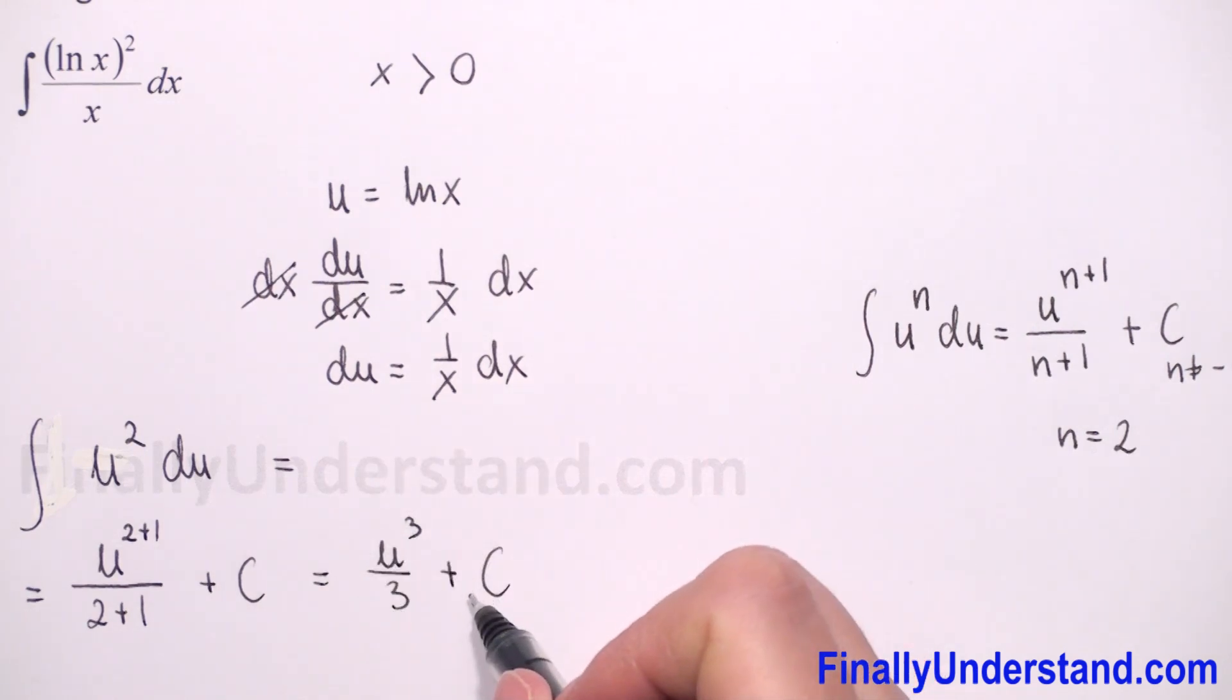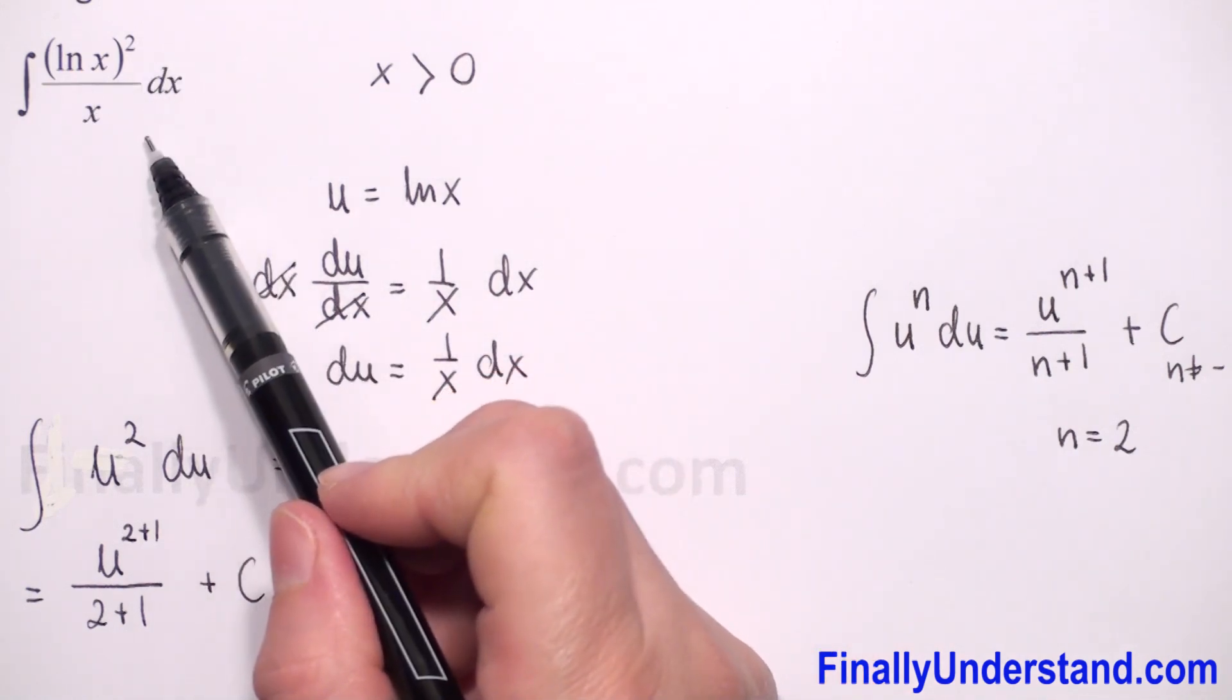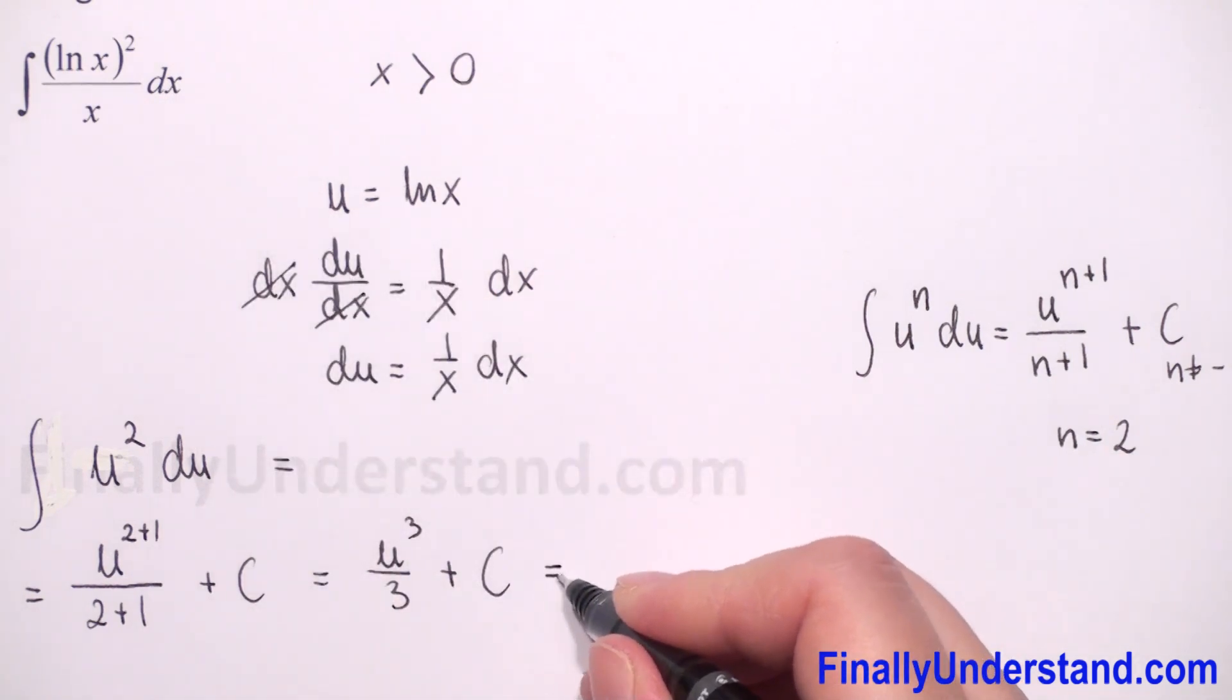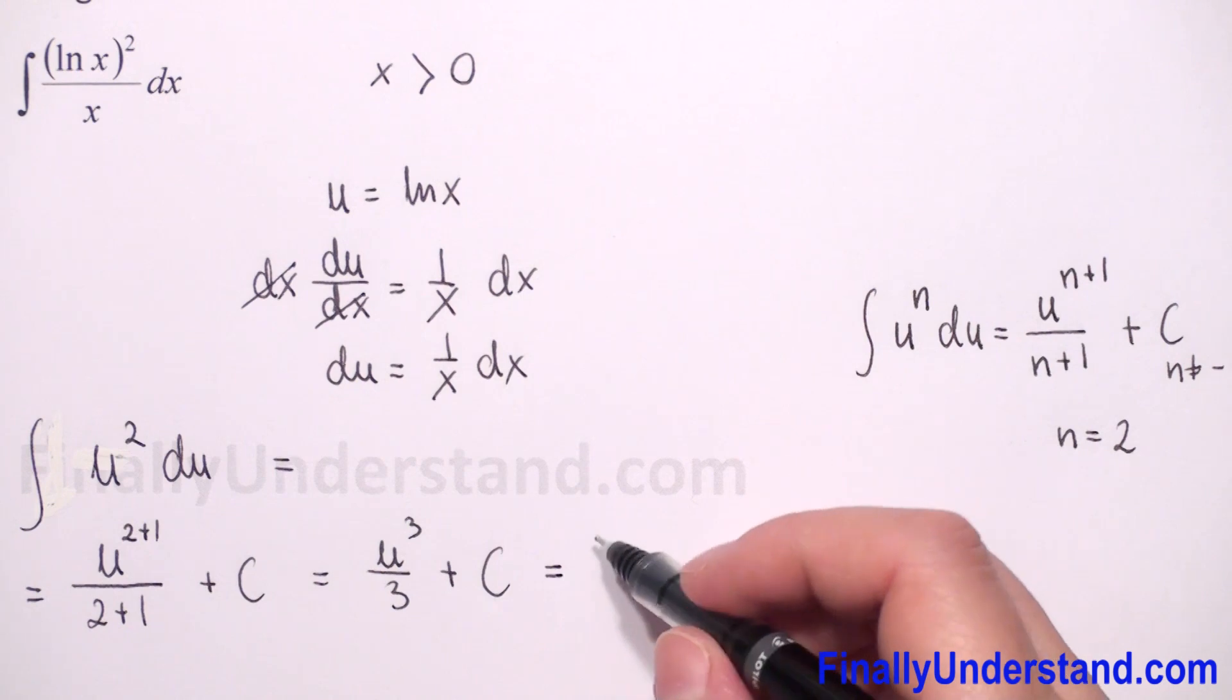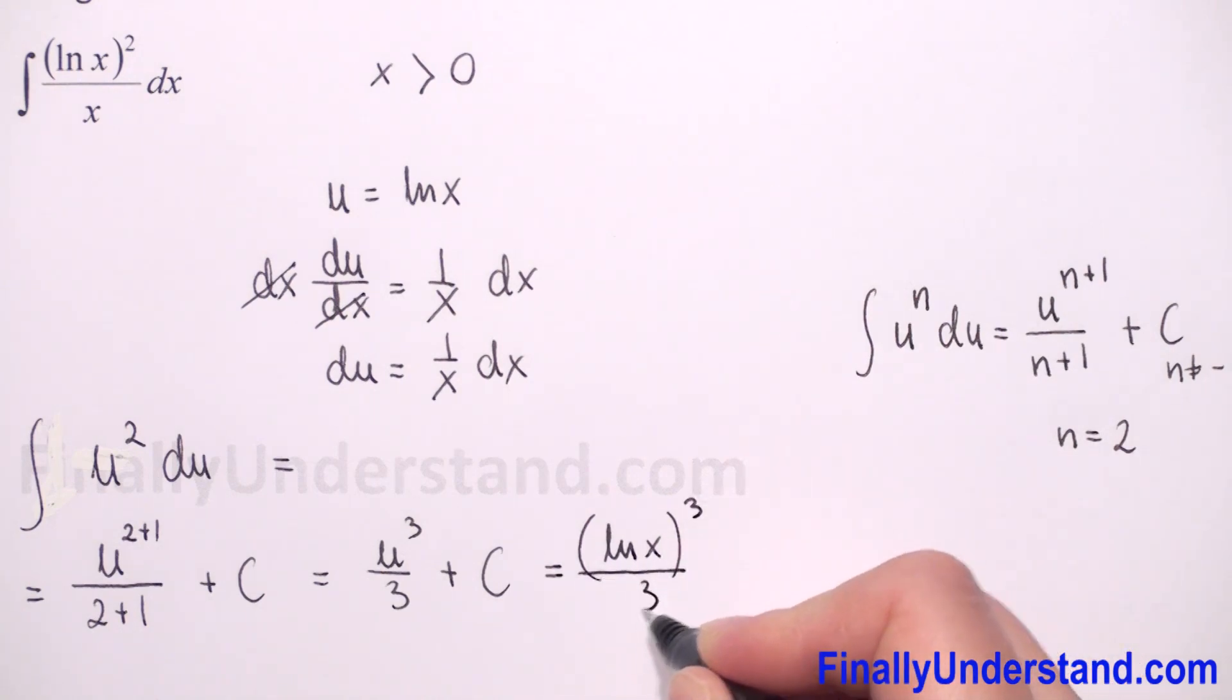We solved our integral with respect to u. So at the beginning we have our indefinite integral with respect to x, so we have to come back to our substitution. We have u equal to natural logarithm of x. So we have to take this to power 3 over 3 plus constant. This is my solution.